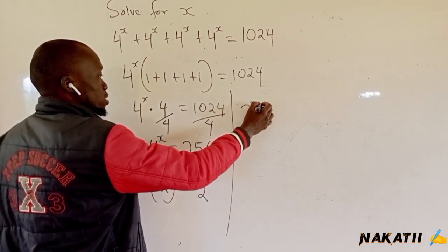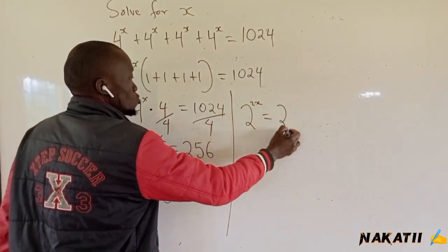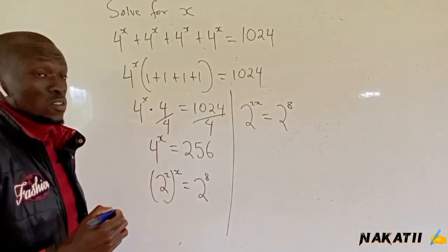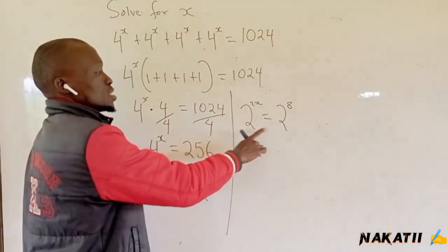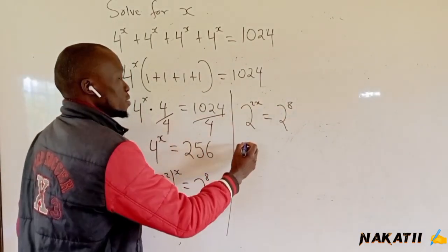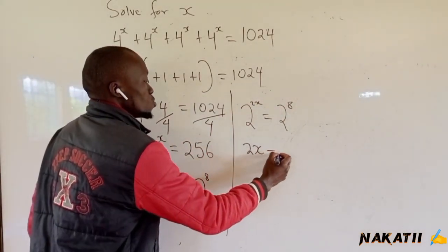We will have 2 raised to 2x equals 2 raised to 8. In laws of indices, when the bases are the same, we just equate the powers. We will have 2x equals 8.